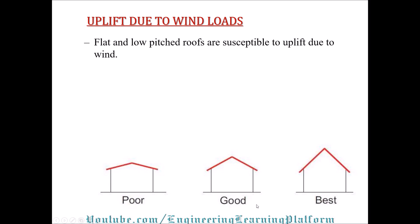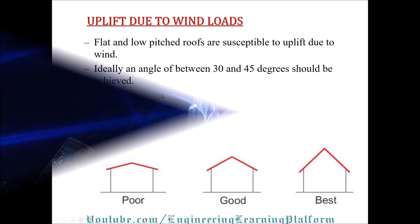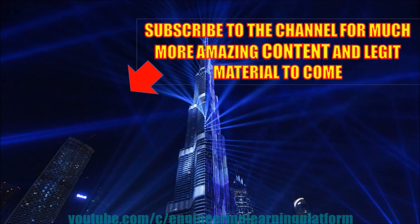The center structure provides reasonably good performance against wind load, while the best performance against wind uplift load is shown on the right side. Ideally, an angle between 30 to 45 degrees should be achieved for the best performance of a gable roof or hip roof against wind uplift load. These are the guidelines for new masonry buildings.